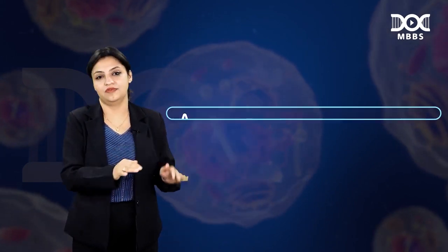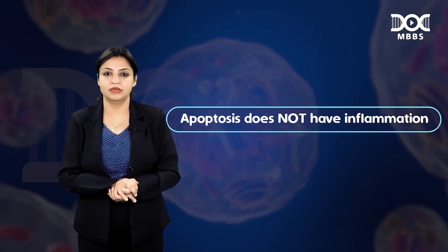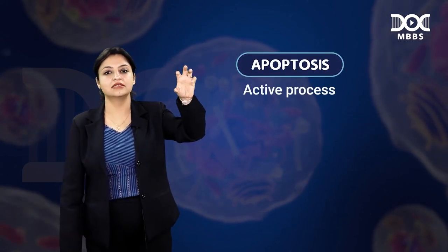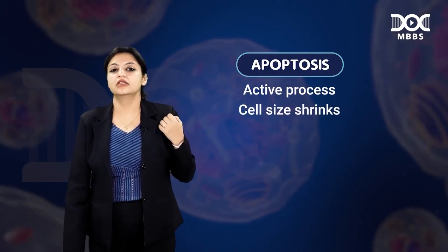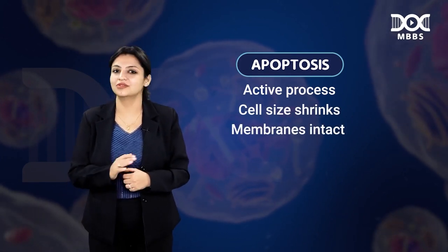Whenever somebody is trying to kill himself, he will never damage his membranes. So in apoptosis, cell membranes are always intact. Also, when you plan to kill yourself, you won't announce it on Instagram — it is very secretive. Nobody should come to know about it, and 'nobody' means inflammatory cells. So apoptosis does not involve any inflammatory cells. To summarize apoptosis: it is an active process, cell size is smaller, membranes are not ruptured, and there is no inflammation.